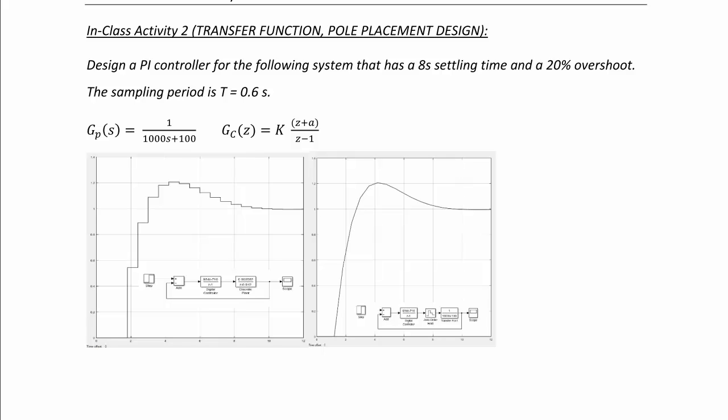In class activity two, transfer function pole placement design. Design a PI controller for the following system that has an 8 second settling time and a 20% overshoot. The sampling period is t equals 0.6 seconds. The plant is in continuous time, 1 over 1000s plus 100. And the controller is k times z plus a over z minus 1, which is a PI controller.